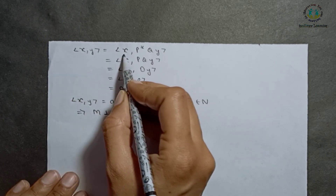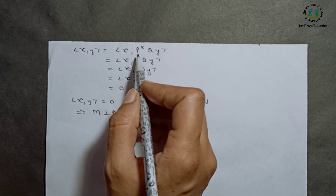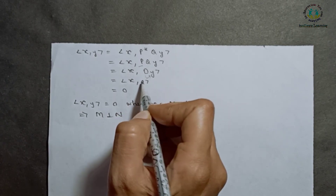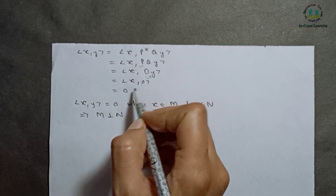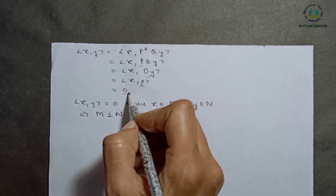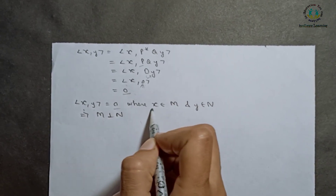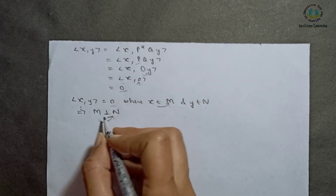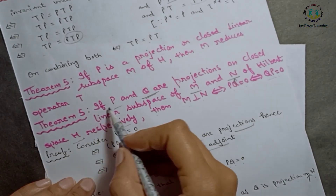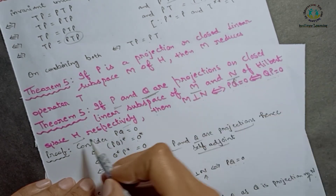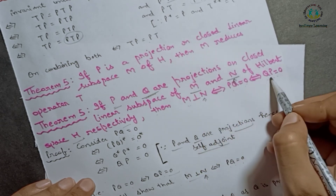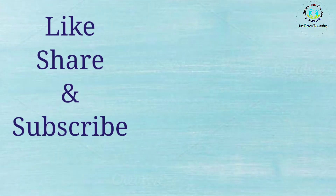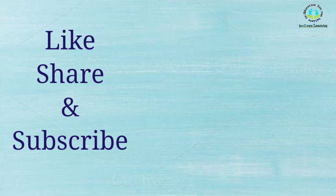Conversely, suppose PQ equals 0 and we show M is perpendicular to N. Let x belong to M and y belong to N. Consider the inner product of x with y: write x as Px and y as Qy, since M is range space of P and N is range space of Q. So the inner product becomes the inner product of Px with Qy, which equals the inner product of x with P* Qy equals the inner product of x with PQy. Since PQ equals 0, PQy equals 0, so the inner product equals 0. Thus x and y are perpendicular, so M is orthogonal to N. That's all for today — hope you like my video, please subscribe to my YouTube channel and share it with others. Thank you for watching.